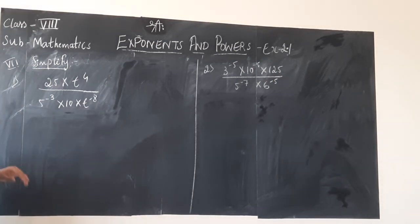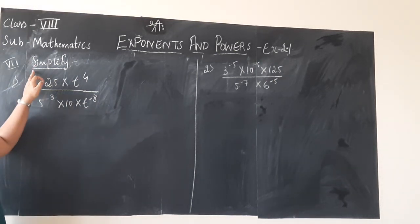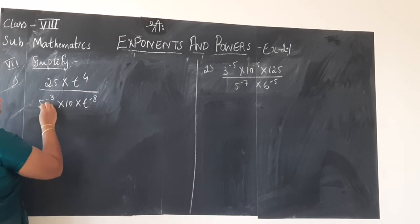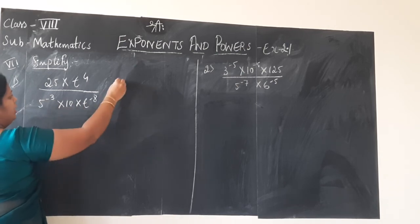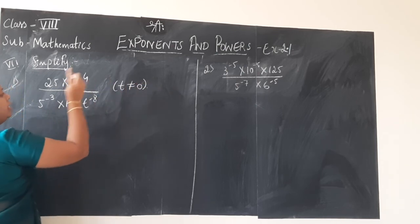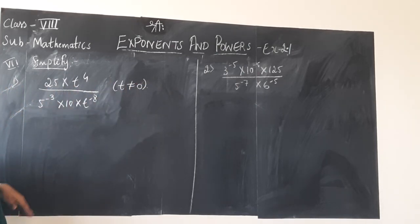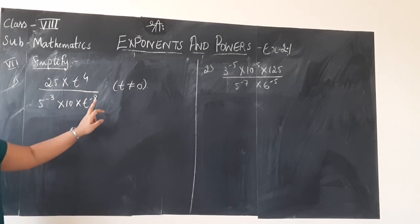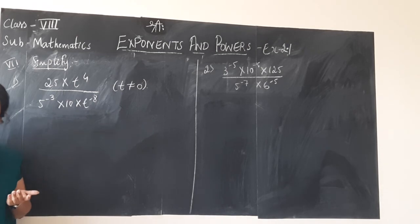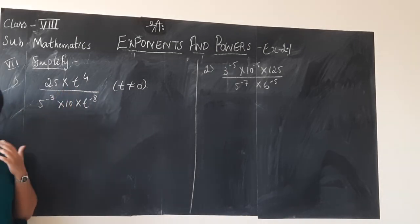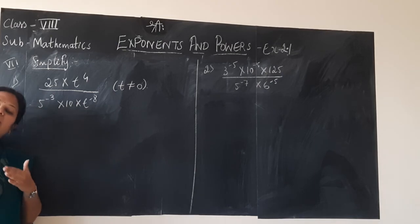Last main of this exercise, 7th main children. The question is to simplify 25 into t to the power 4, divided by 5 to the power minus 3 into 10 into t to the power minus 8, and we have given that t is not equal to 0. Here in place of numbers we have t — it is not like always we should have numbers. There can be anything, but just concentrate whether the bases are same or not.